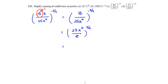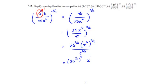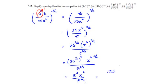We distribute the 3/2 exponent to each term of the base, giving 25 to the 3/2 times x to the 6th to the 3/2, all over z to the 3/2. We use the fact that 25 to the 3/2 is 25 to the 1/2 raised to the 3rd power. x to the 6th to the 3/2 is x to the 6 times 3/2 — multiply the exponents. The denominator remains z to the 3/2. Since 25 to the 1/2 is 5, we have 5 cubed, and 6 times 3/2 is 9, over z to the 3/2. This simplifies to 125x to the 9th over z to the 3/2 power.